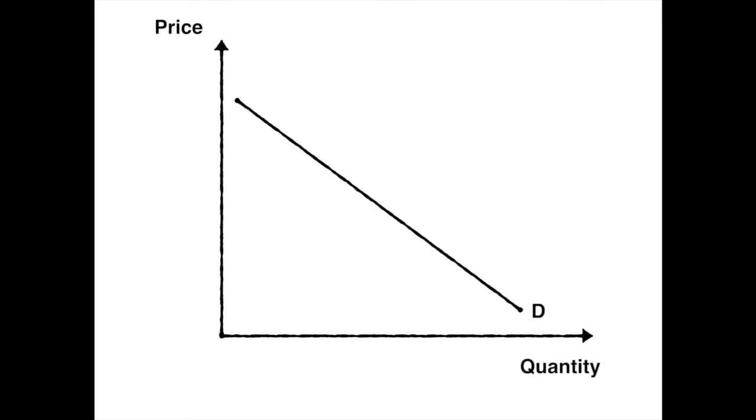Market disequilibrium occurs when there's either too much supply in the market or too much demand in the market. And again we're going to lay out a diagram to see this step by step. So we have price and quantity, downward sloping demand,